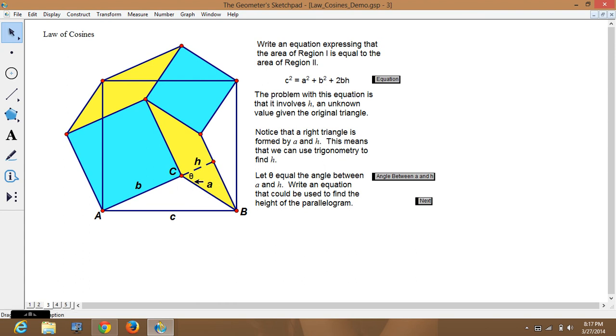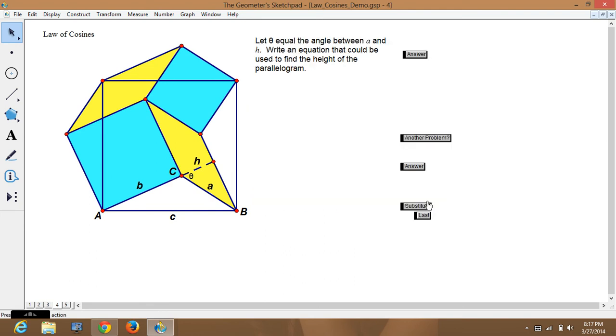So, this is the right angle. So, A is the hypotenuse. And H must be the adjacent. So, theta will equal the angle between A and H. And we can write an angle that can be used to find the height of the thing. And we already said this is adjacent. This is hypotenuse.